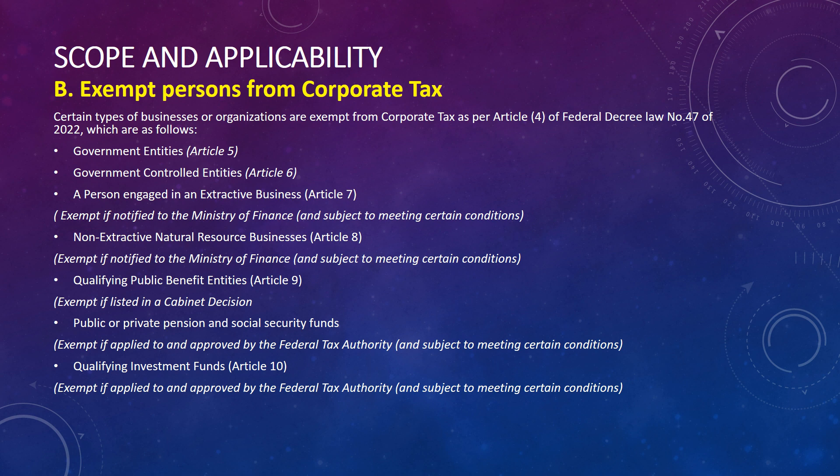There are certain categories of companies that are exempt from paying corporate tax in the UAE. Those are mainly: government entities, government-controlled entities, persons engaged in an extraction business, non-extractive natural resource businesses, qualifying public benefit entities, public or private pension or social security funds, and qualifying investment funds. All of these are exempt persons under corporate tax, subject to certain approvals and conditions.